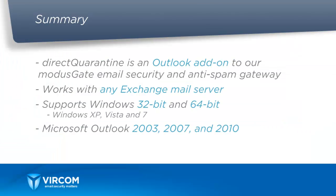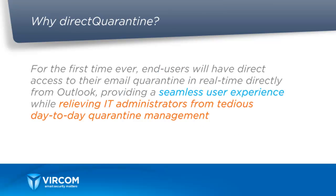In summary, Direct Quarantine is an Outlook add-on to our ModusGate email security and anti-spam gateway. On the client side, it'll support any type of Windows, 32-bit or 64-bit — it can be Windows XP, Vista, or 7. For the Outlook version, we support Outlook 2003, 2007, and 2010. For the first time ever, end users will have direct access to their quarantine email in real time directly from Outlook, providing a seamless user experience while relieving IT administrators from tedious day-to-day quarantine management.